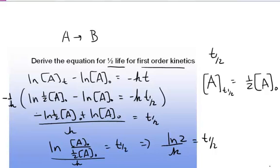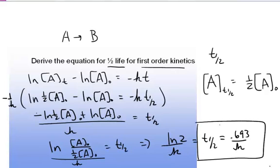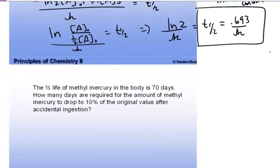And what you can see here, which is very important, which is the same as .693 over k, what you can see here that's very important is that the half-life is independent of concentration. Alright, so this is a convenient equation that we can use. Let's use it here.